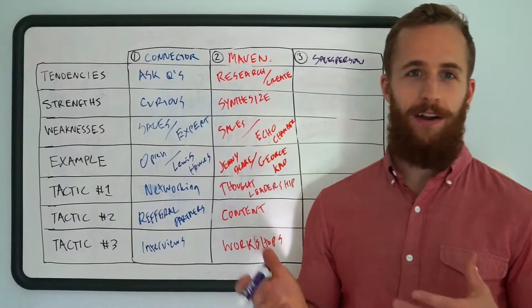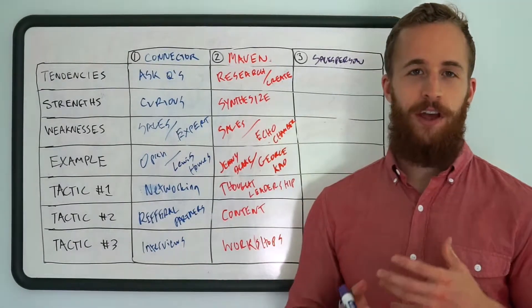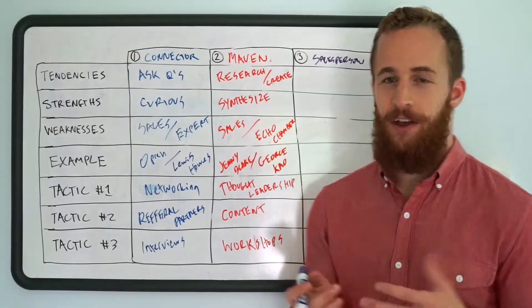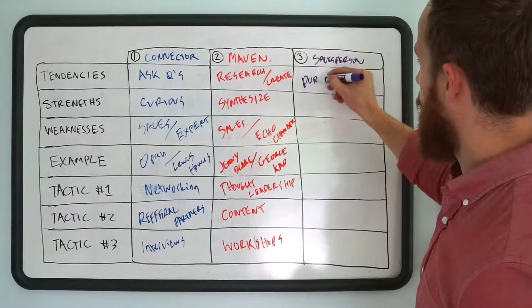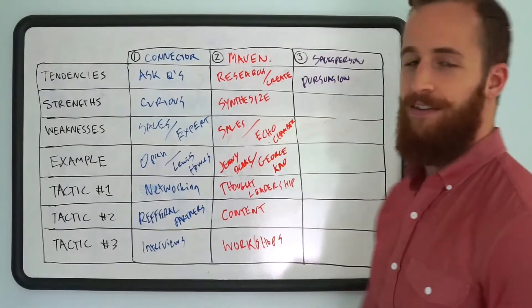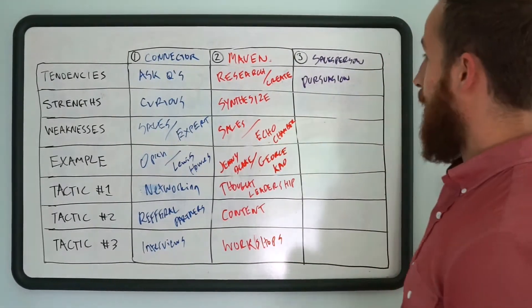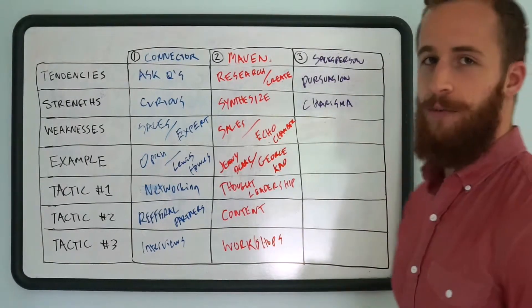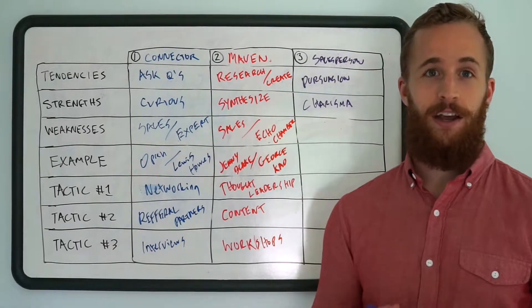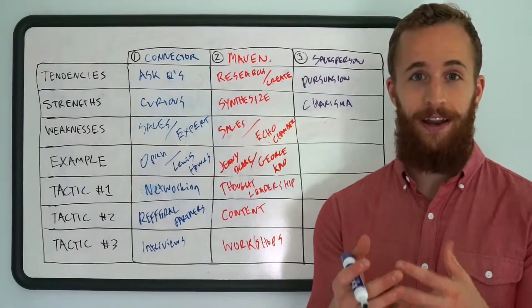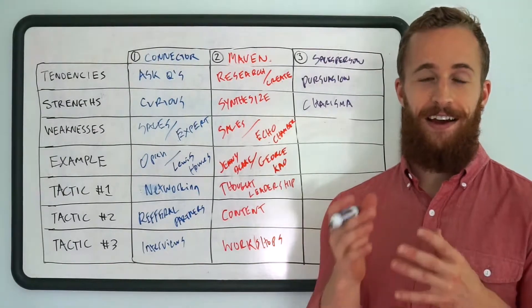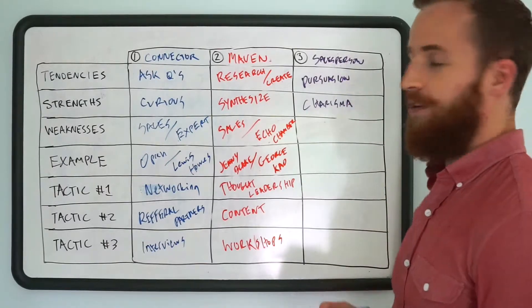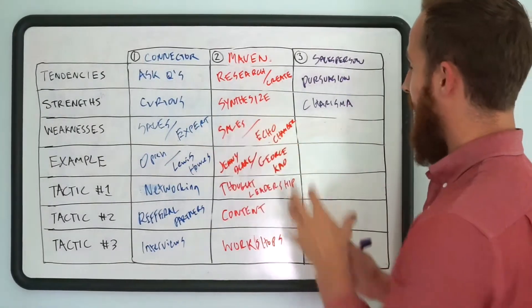Now the salesperson, again, exactly like it sounds. Although some people have a bad connotation with the word sales. So what I want you to think about is persuasion. That's the main tendency of the salesperson. And one of their strengths is charisma. They tend to be very charismatic which is why people want to listen to them, want to take action, are willing to go for it when the salesperson suggests they make a decision. All right. So tendency is persuasion. Strength is charisma.